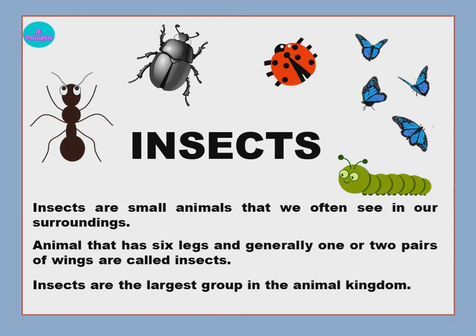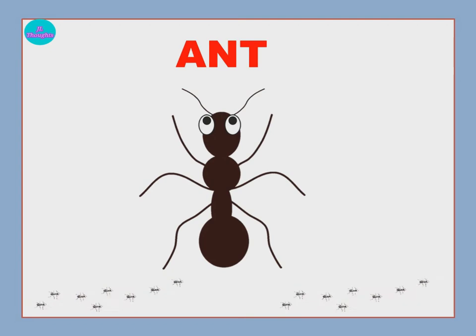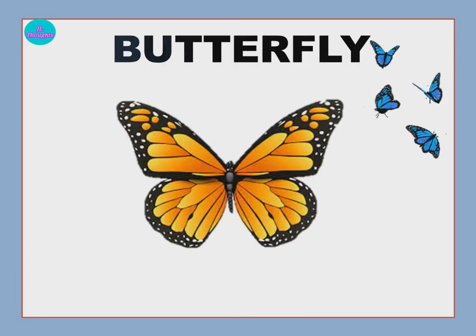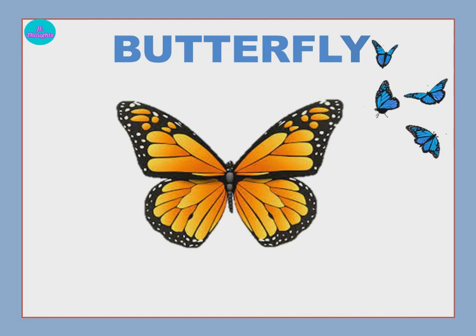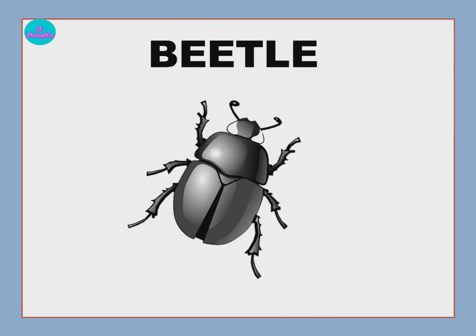Now let's learn the names of a few insects. Ant — A-N-T — Ant. Butterfly — B-U-T-T-E-R-F-L-Y — Butterfly. Beetle — B-E-E-T-L-E — Beetle.